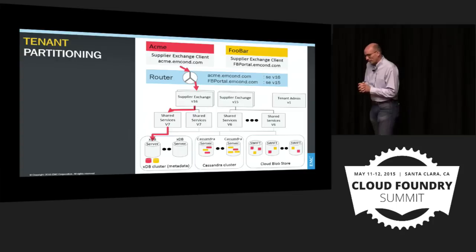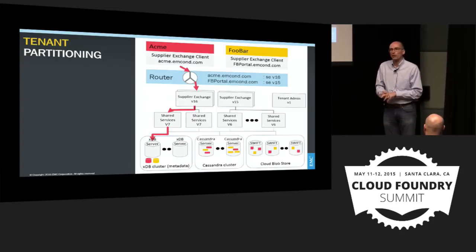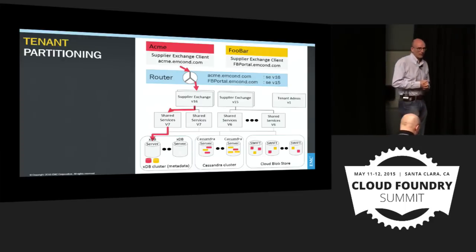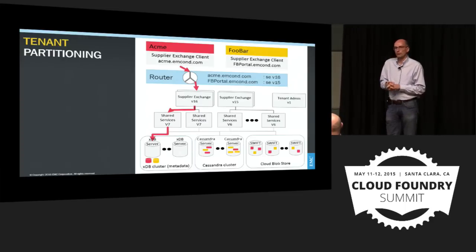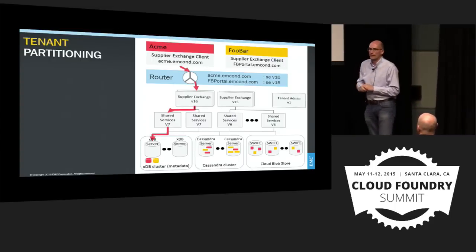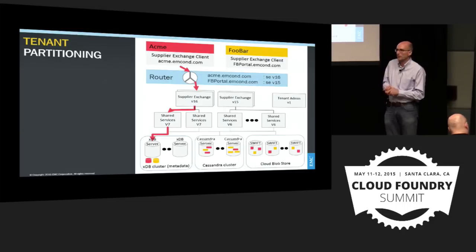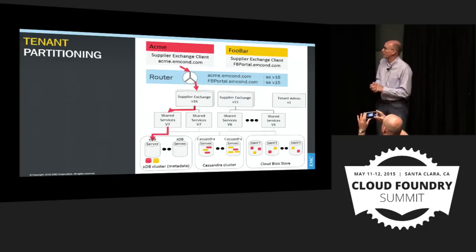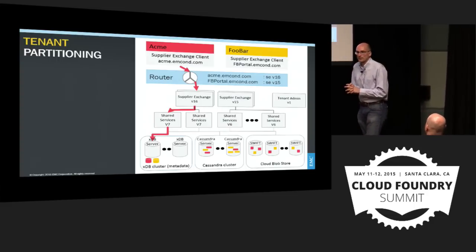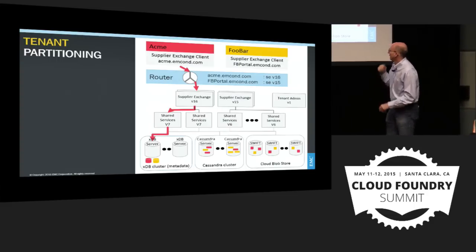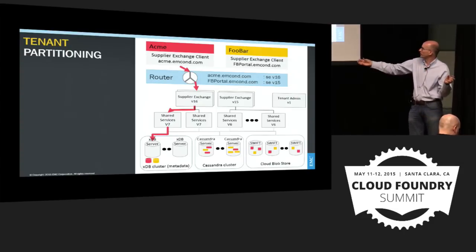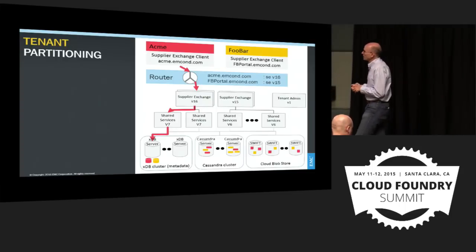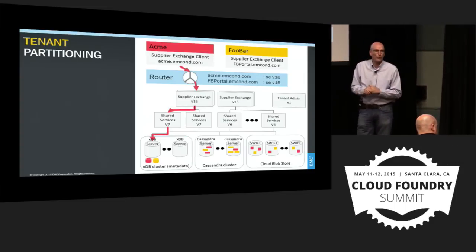We built a multi-tenant public cloud platform as well as solutions on top of it. Customers can personalize their URI and the behavior in the application. We run shared microservices in our application platform as a service on top of our persistence model — Cassandra as the key-value store, our own XDB database for metadata, and scale-out repositories. The first application we built is the Supplier Exchange app, and each customer gets a dedicated URI to hook into this platform.